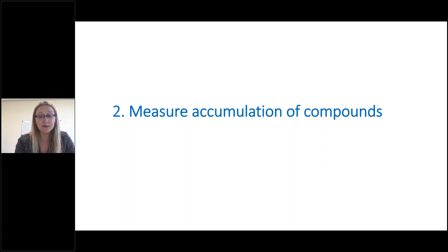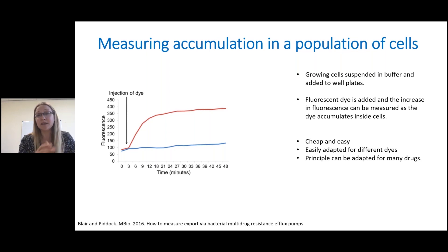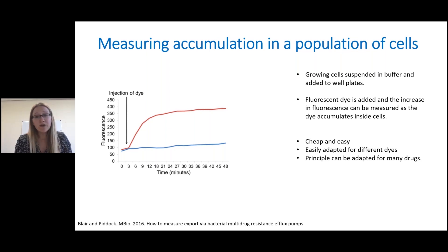In the spirit of the REVIVE program, I'll briefly mention some simple techniques with widely available equipment to measure accumulation of compounds. The simplest way to measure accumulation is to measure accumulation of compounds that can easily be detected. These methods were set up using fluorescent compounds that are differentially fluorescent inside and outside cells. The graph here is done using ethidium bromide. Ethidium bromide is not fluorescent in solution, but when it gets inside cells, it intercalates DNA and becomes fluorescent.